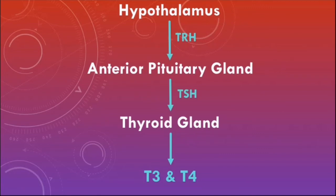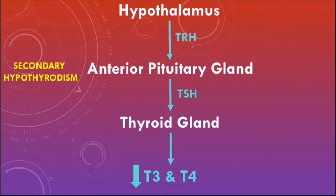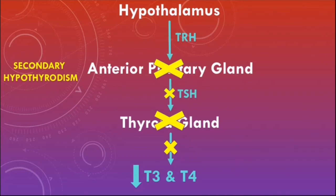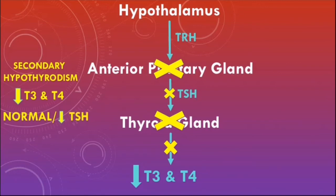Secondary hypothyroidism refers to conditions that affect the anterior pituitary gland. If the anterior pituitary gland does not produce enough TSH, there will be less stimulation of the thyroid gland to produce thyroid hormones. Secondary hypothyroidism is characterized by low levels of free T3 and T4 and an inappropriately normal or low TSH level.